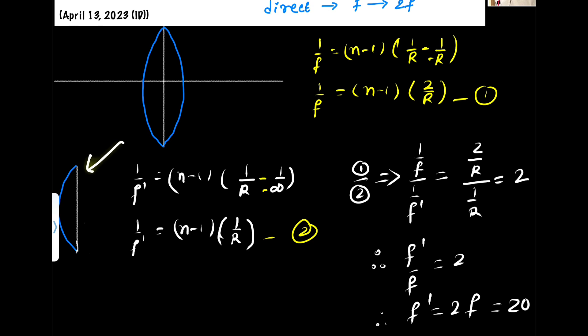So this is the part which we have cut. So 1 upon f dash equals n minus 1, 1 by r minus 1 upon infinity. This part has radius infinity. So 1 by infinity is 0, so the new focal length is 1 upon f dash equals n minus 1 into 1 by r.